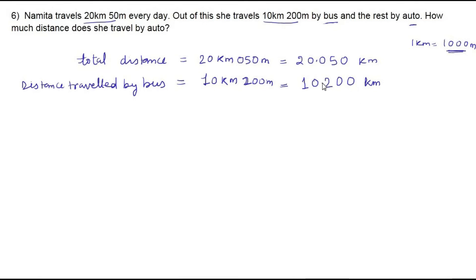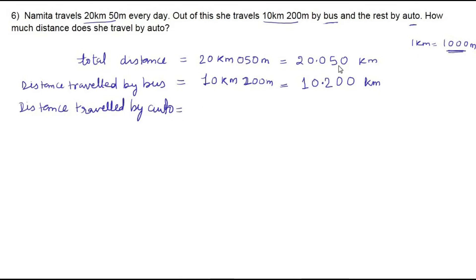Since there are three zeros in 1000, count three digits from the right side and put the decimal point. So 20 kilometer 50 meter converts to 20.050 kilometer, and 10 kilometer 200 meter converts to 10.200 kilometer. The distance traveled by auto equals 20.050 kilometer minus 10.200 kilometer.